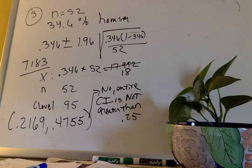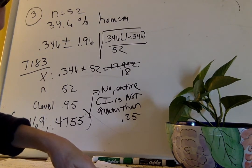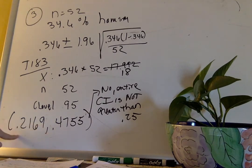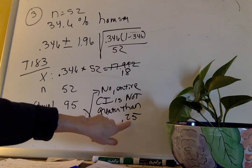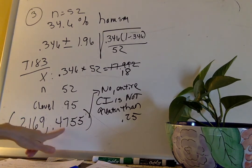Is there evidence more than a quarter — more than 0.25 — have a hamster? No, the entire CI is not greater than 0.25. But if I ask is there evidence more than 20% have a hamster at home — yes, the entire CI is greater than 0.2. And is there evidence less than half have a hamster at home? Yes, the entire CI is less than 0.5.